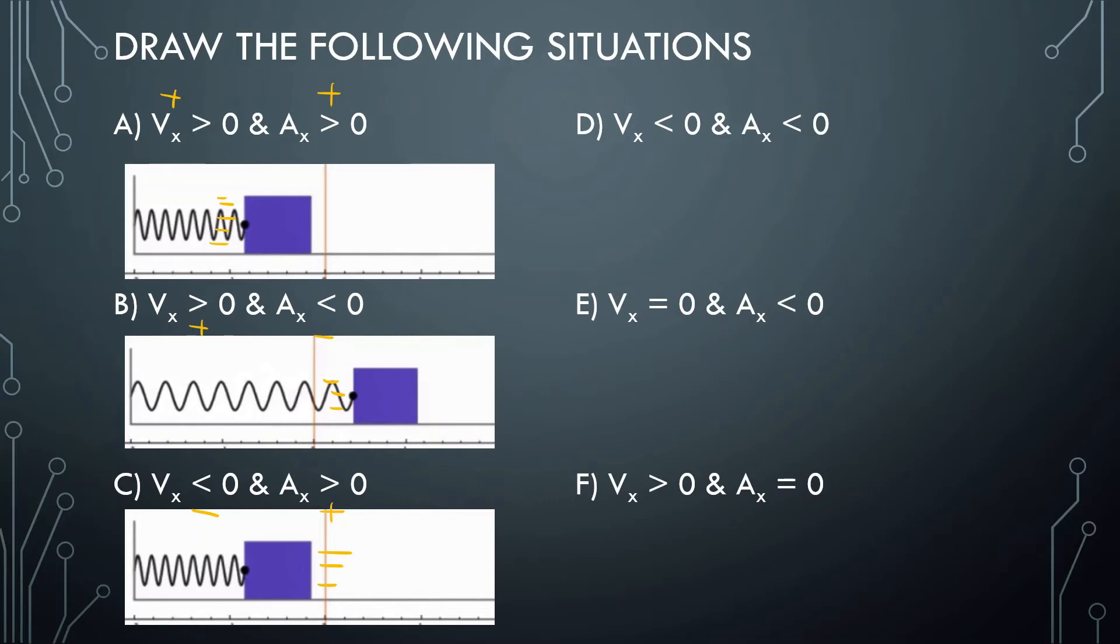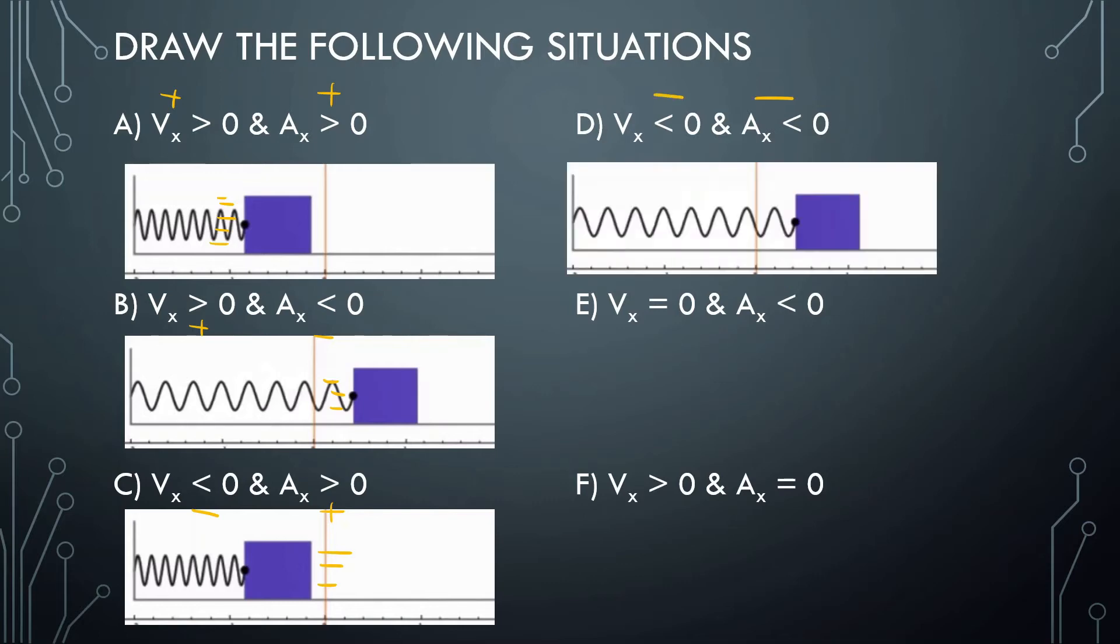Part D, velocity is negative, acceleration is also negative. It looks the same thing as B, but this time it's moving to the left and the spring is also pushing it to the left, so it's getting faster and faster going towards the equilibrium.